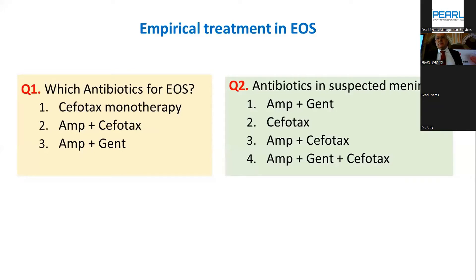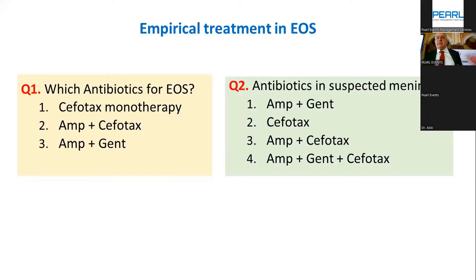What if the patient has suspected meningitis? Some experts choose ampicillin plus cefotaxime. I would choose ampicillin, gentamicin, and cefotaxime. Cefotaxime is bactericidal and diffuses better than gentamicin into the brain. I add cefotaxime for gram-negative bactericidal activity, ampicillin for gram-positive coverage, and keep gentamicin because it works in synergy with ampicillin. These are suggested protocols based on expert opinion reviewed with infection control.